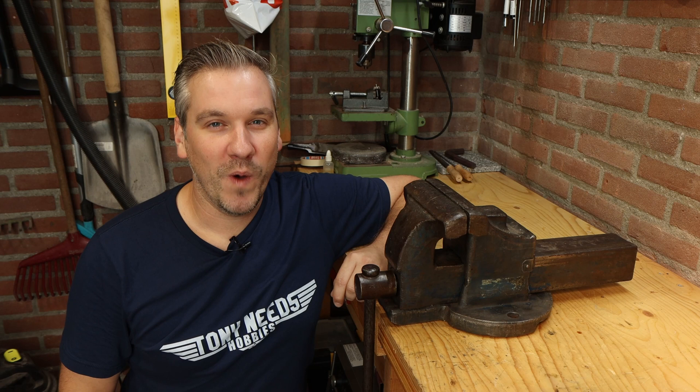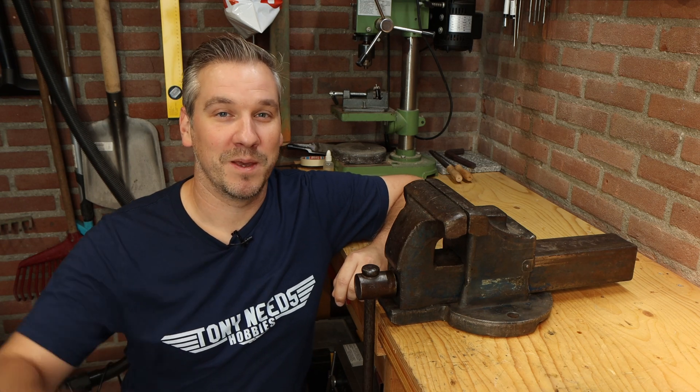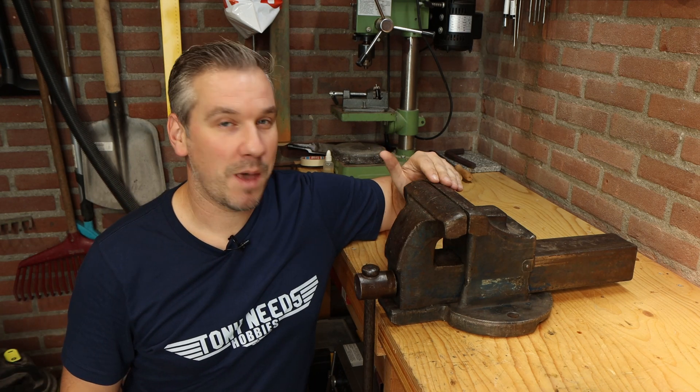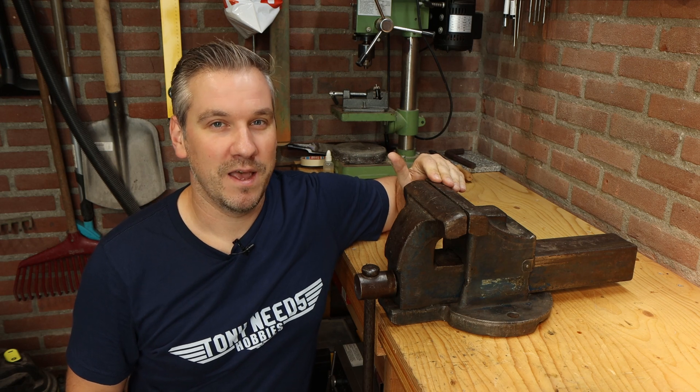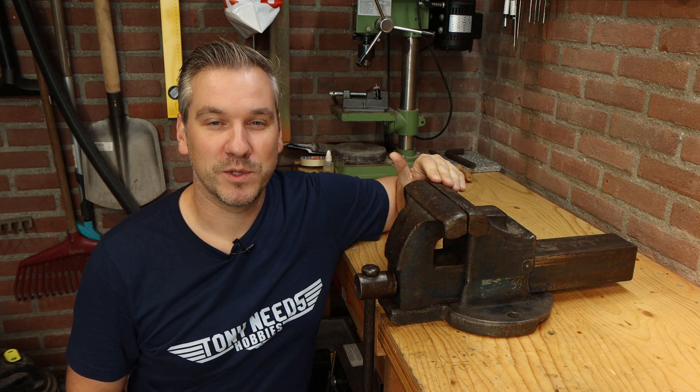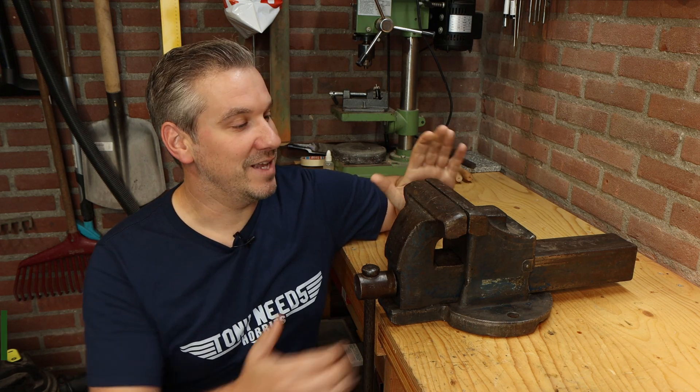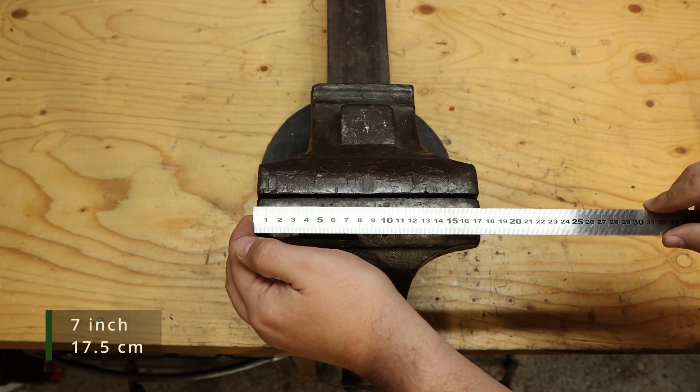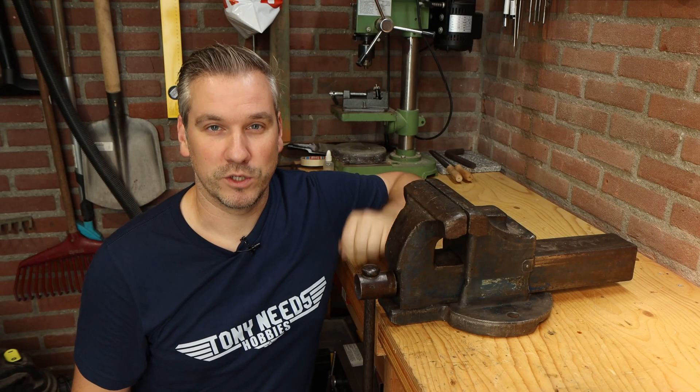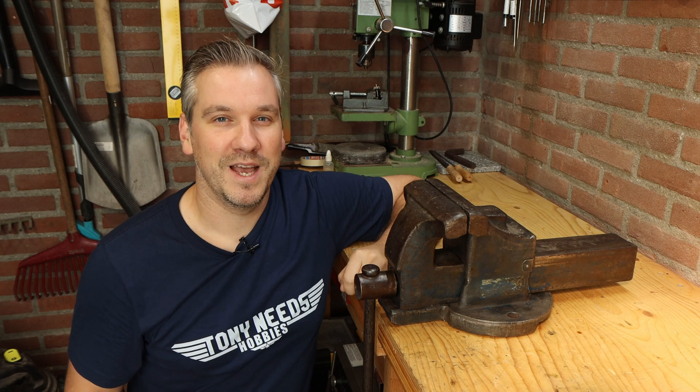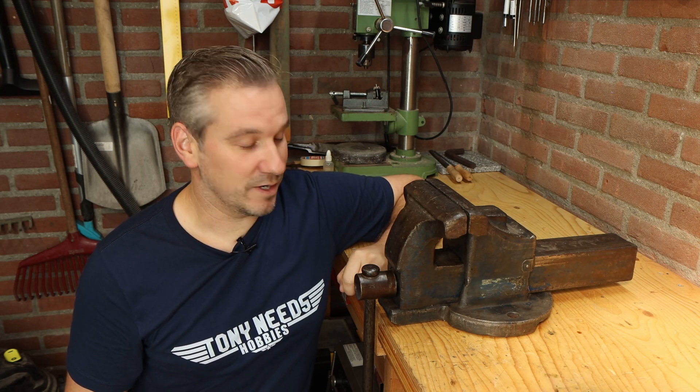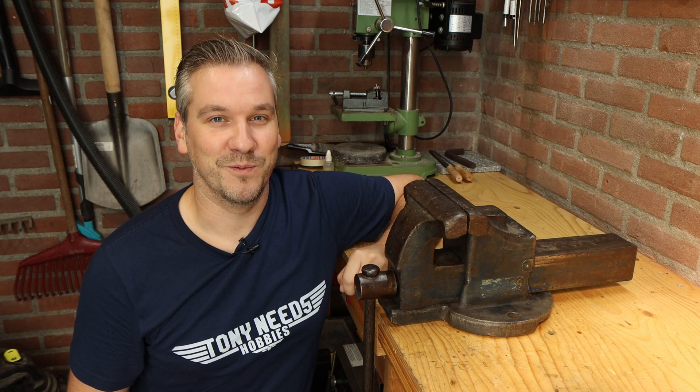Hello ladies and gentlemen, welcome to Tony Needs Hobbies. My name is Tony, and recently I picked up this big vice. It weighs 27 kilograms or about 60 pounds, has 7-inch jaws, and it only cost me 20 euros, which is about 22 dollars. That is a steal, but there's one big problem with it: it doesn't work.